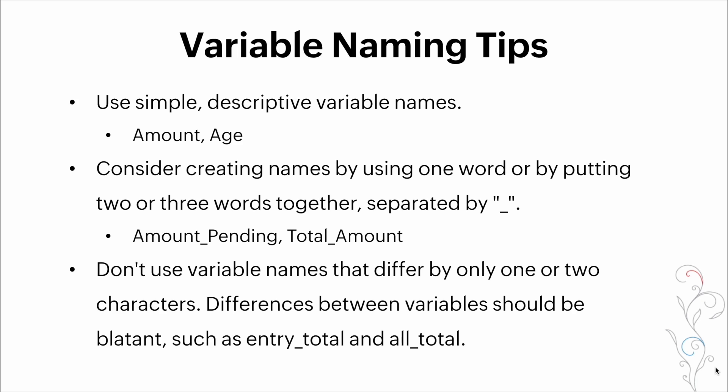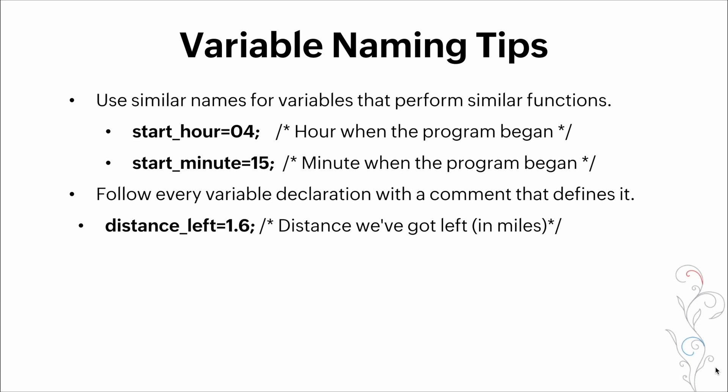Here are some variable naming tips. Use simple descriptive variable names like amount or age. Consider creating names by using one word or by putting two or three words together separated by an underscore. This is referred to as snake case. Don't use variable names that differ by only one or two characters. Differences between variables should be very easy to see, such as entry total and all total. Use similar names for variables that perform similar functions.